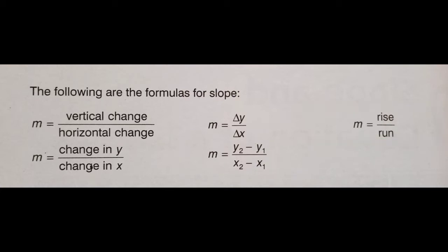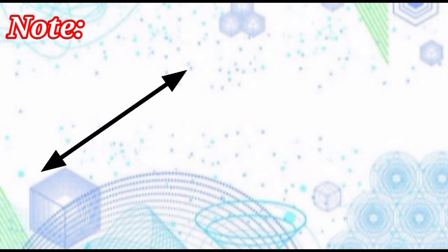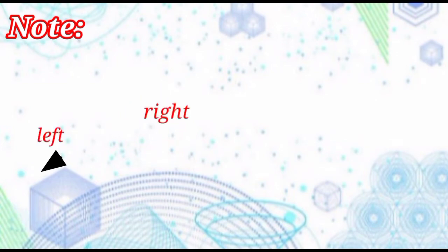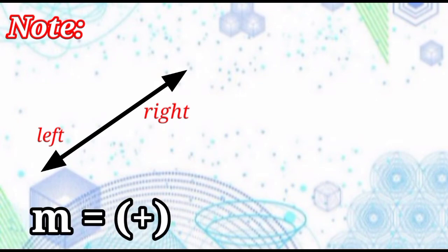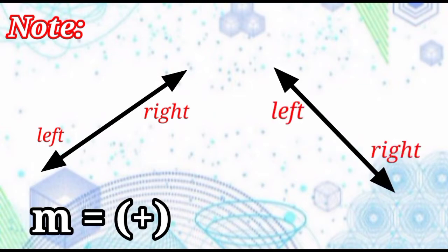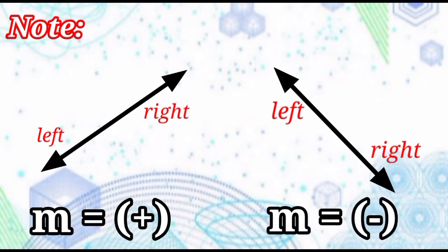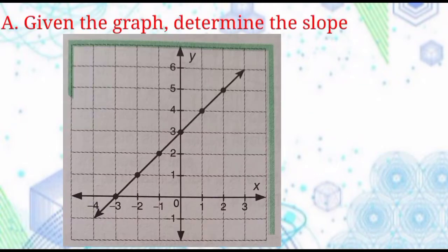we can use M equals rise over run. Note that an upward or rightward motion, or a line rising from left to right, represents a positive value for slope. And if the line is falling from left to right, it represents a negative value for slope.